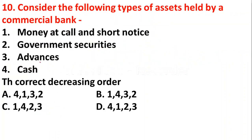The next question: consider the following types of assets held by a commercial bank — first, money at call and short notice; second, government securities; third, advances; fourth, cash. The question asks for the correct decreasing order of liquidity of these assets.